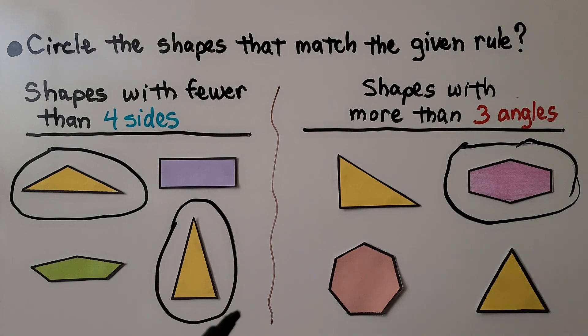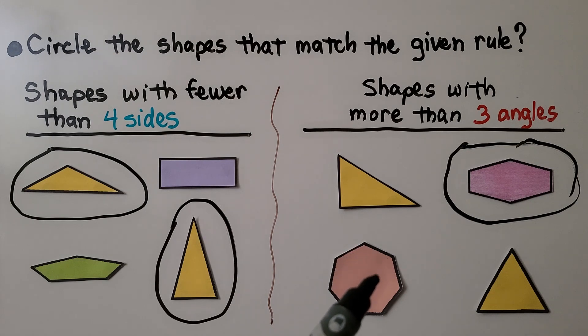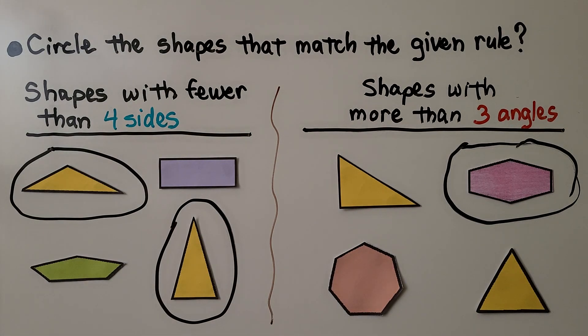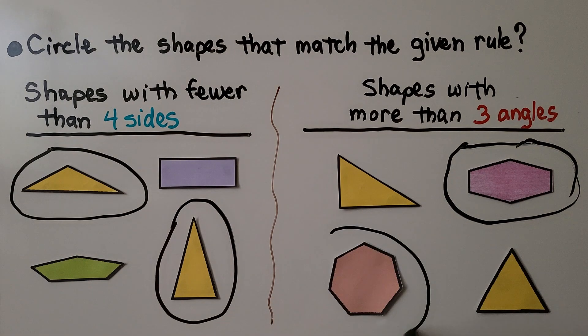This one has one, two, three, four, five, six, seven angles. That's definitely more than three, so we can circle that one also.